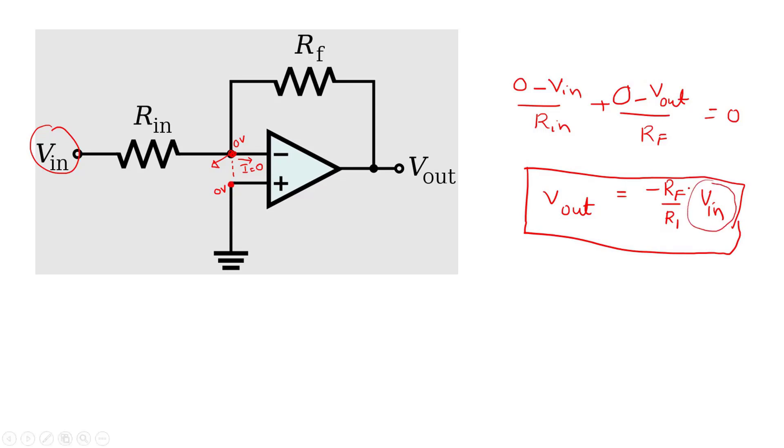That means if Vin is a positive voltage, output is negative. If Vin is negative, output voltage Vout is positive. Using this information we can solve the given problem.